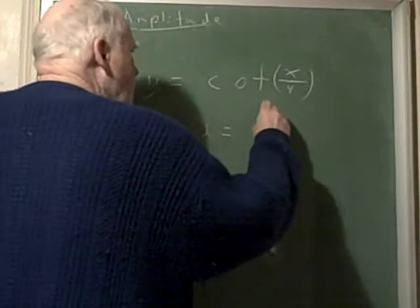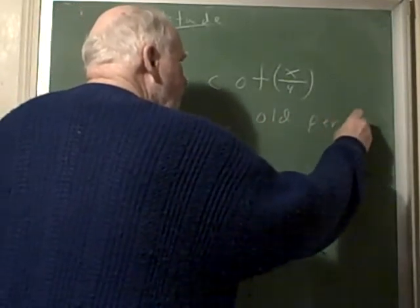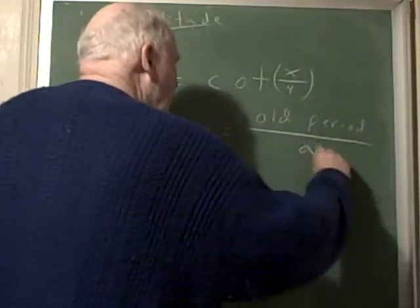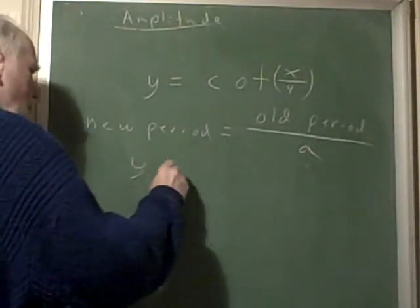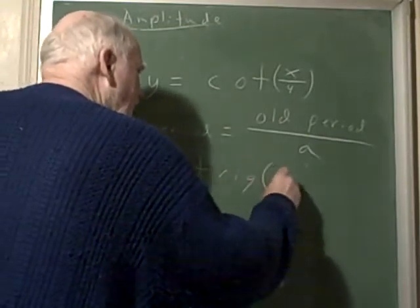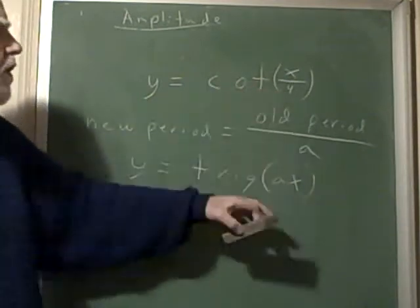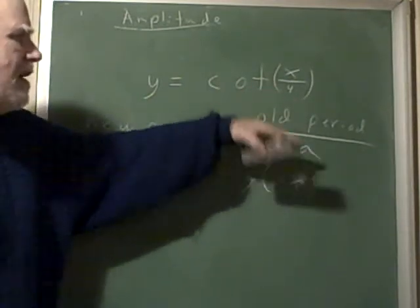You're looking at y equals some trig function of a x. Here the a is 1/4. So if you put 1/4 over pi, it will give you 4 pi.